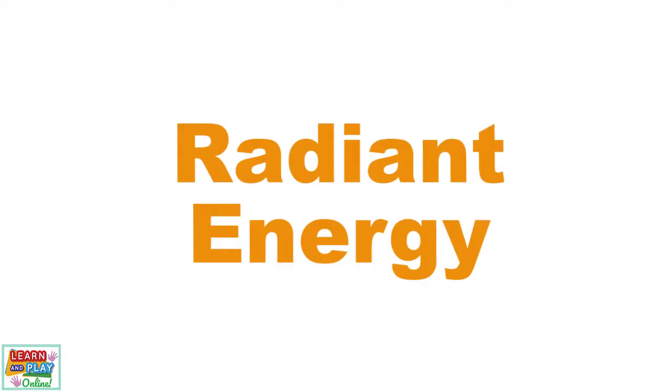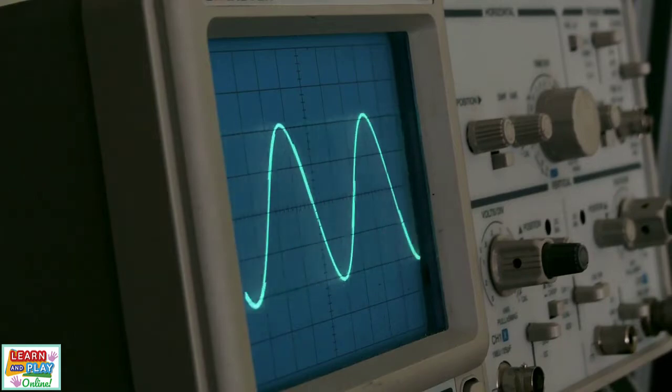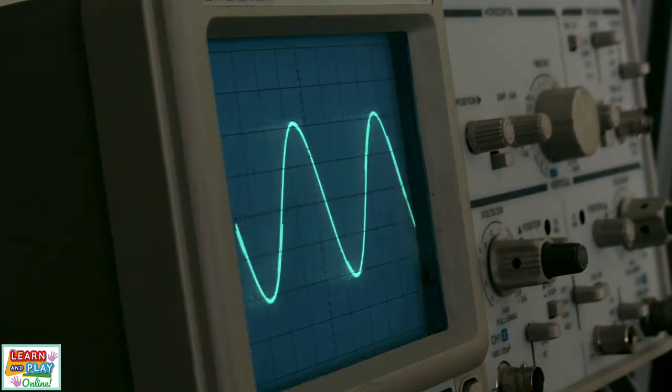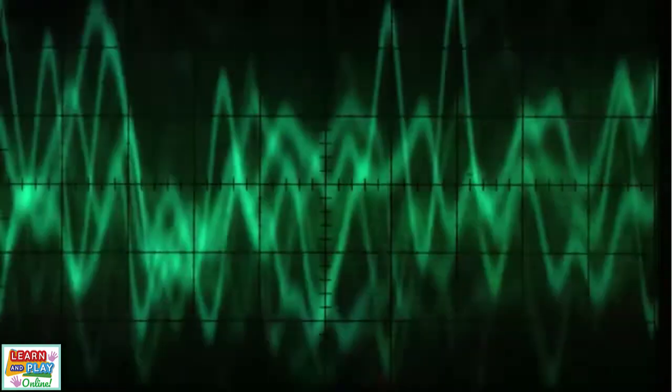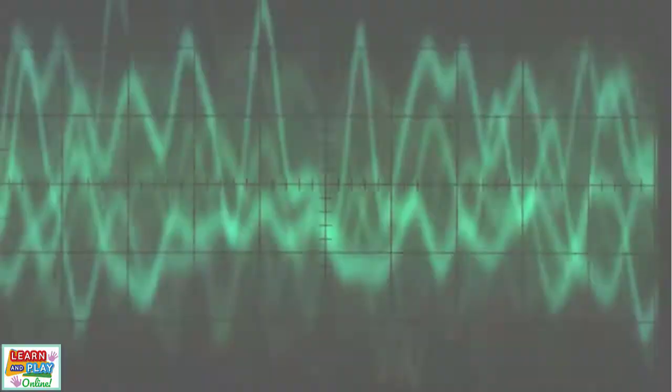Now we've reached the last form of kinetic energy we will explore today, which is radiant energy. Radiant energy is a form of what's known as electromagnetic energy. It is described as a form of kinetic energy because the electromagnetic radiation, which is made up of tiny particles called photons, move in the form of a wave.